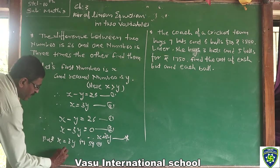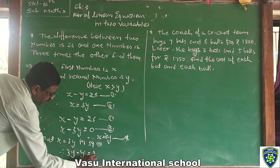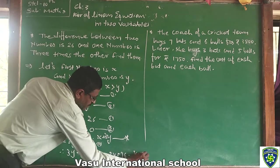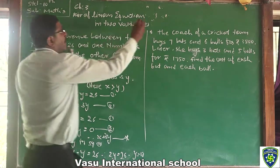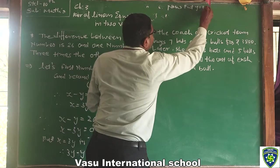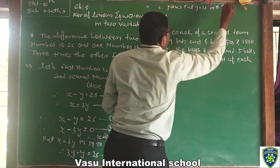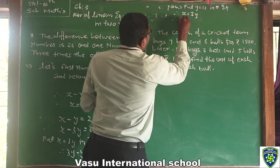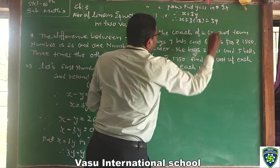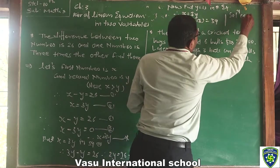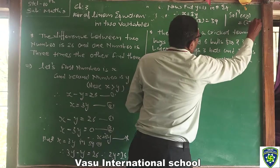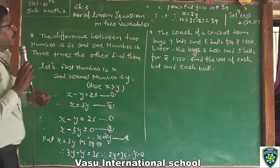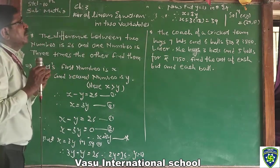Substituting x equals 3y into Equation 1 gives y is equal to 13. Now put y equals 13 into the starred equation, which is x equals 3y. So x is equal to 3 times 13, which equals 39. Therefore the solution is x equals 39 and y equals 13.